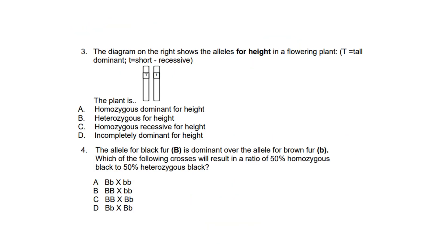Question three. The diagram shows the alleles for height in a flowering plant: T equals tall dominant, and small t equals short recessive. The answer is B. The diagram shows one dominant allele, capital T, and one recessive allele, small t, which represents the heterozygous genotype Tt. A heterozygous individual displays the dominant trait — tall height — because T is dominant over t.